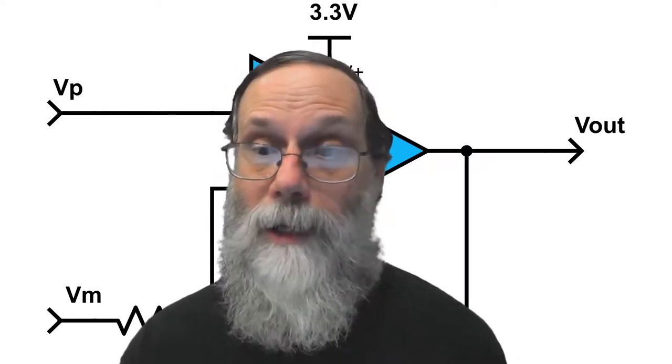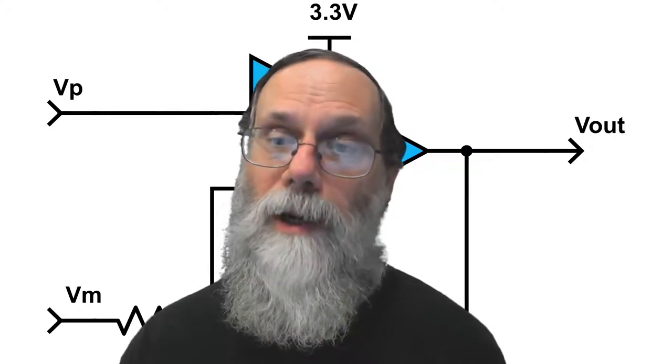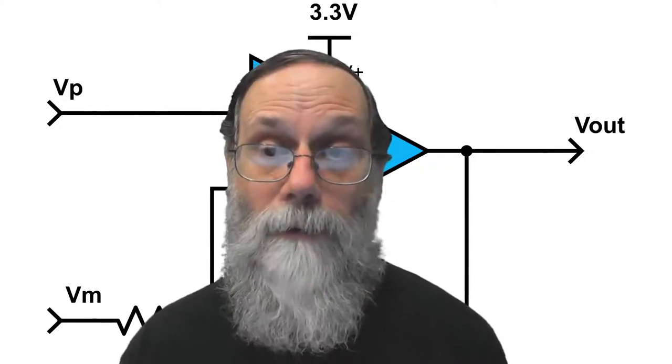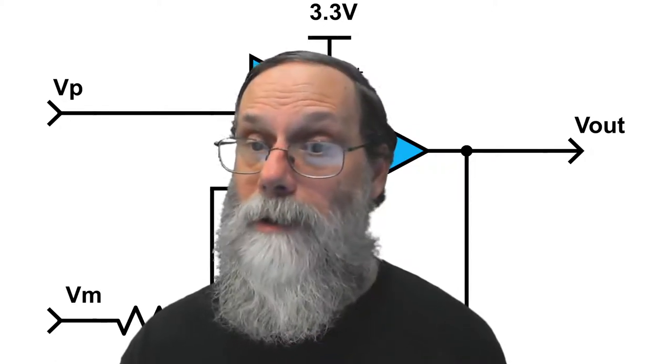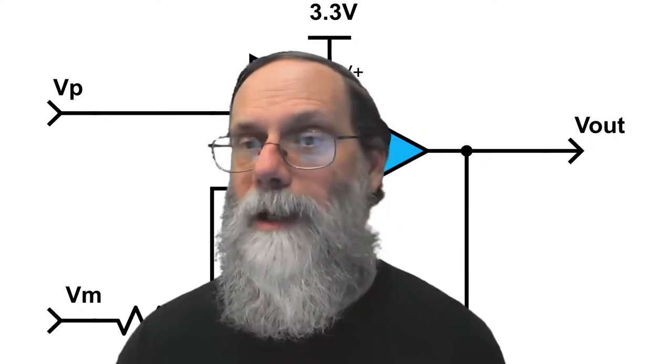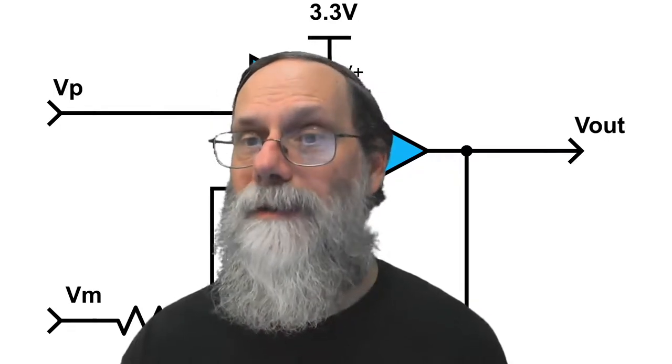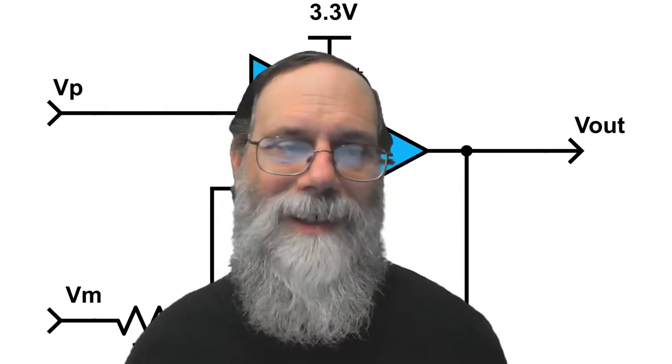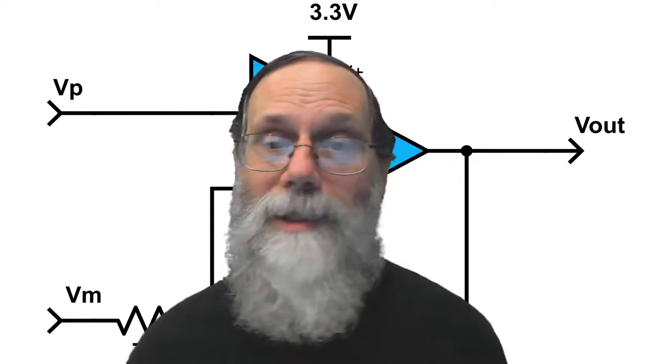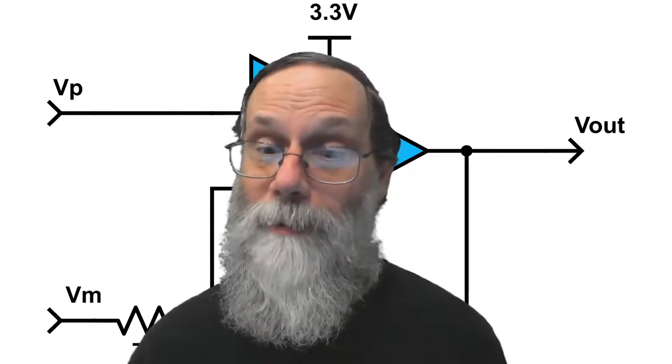When we use the Teradac data acquisition system where we're taking the input pins of the analog-to-digital converter on the TLC, those have very high input impedance. So you'd say, oh, I'm not going to change my circuit by much. I mean, we're talking not about megaohms, but about hundreds of megaohms. Shouldn't make any difference. Except for, unfortunately, that's not true.